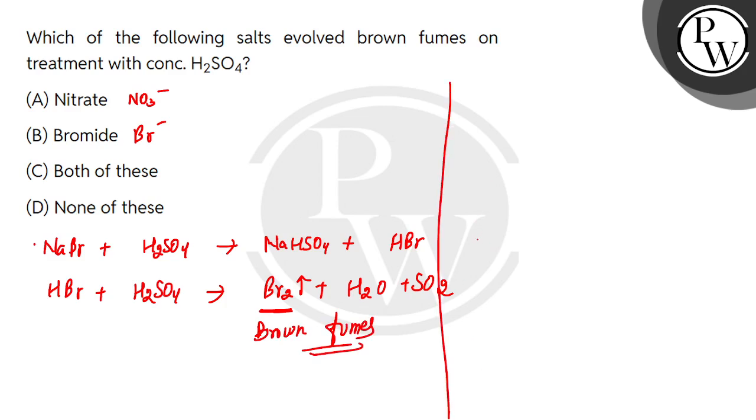In a similar way, if I take a nitrate example - NaNO3 with concentrated H2SO4 - it will become NaHSO4 plus HNO3.